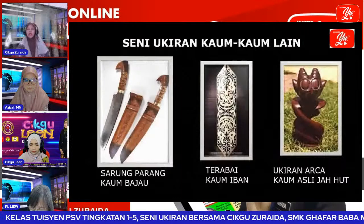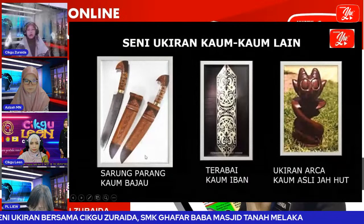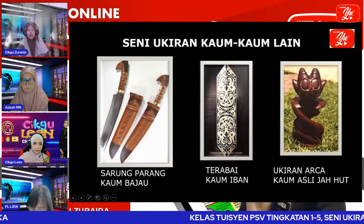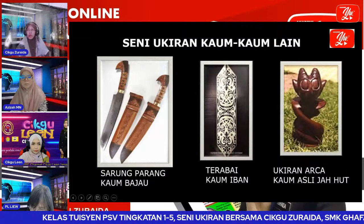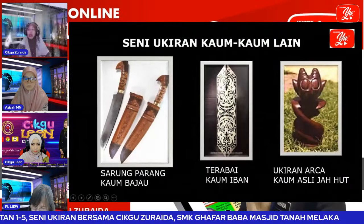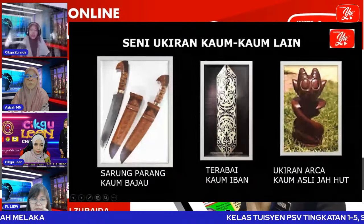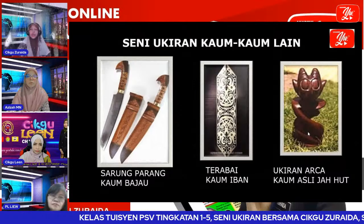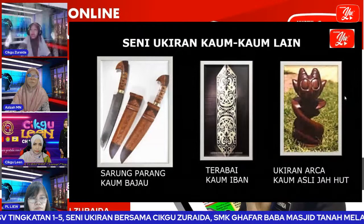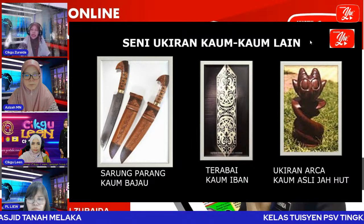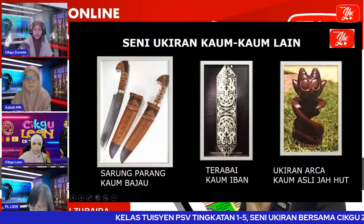Untuk di Sabah, ukiran kita boleh lihat contohnya pada kaum Bajau pada sarung parangnya. Manakala di Sarawak, kita ada kaum Iban yang memegang terabai atau perisai — dia ukir juga dengan motif-motif tertentu, contohnya motif pacat dan burung. Dan ini adalah satu contoh lagi, ukiran arca kaum asli Jahut — mereka banyak mengukir dengan motif yang bermotifkan kepercayaan-kepercayaan mereka tentang nenek moyang.